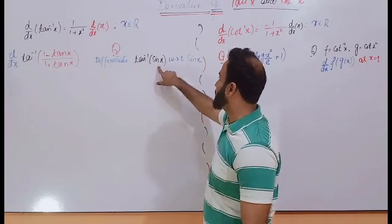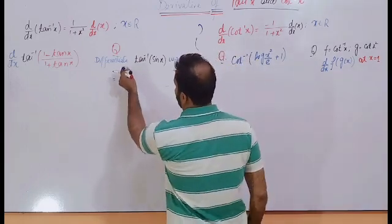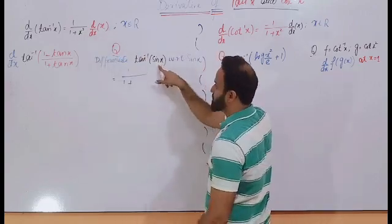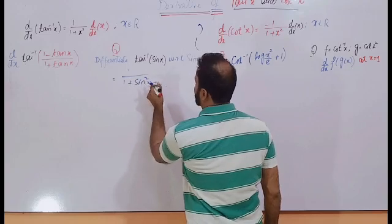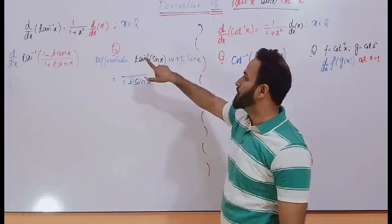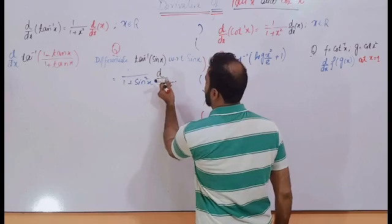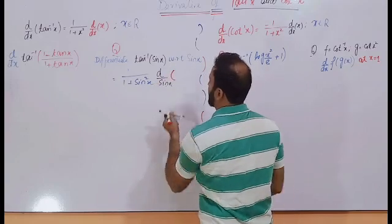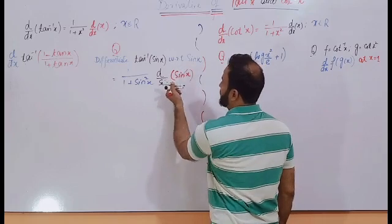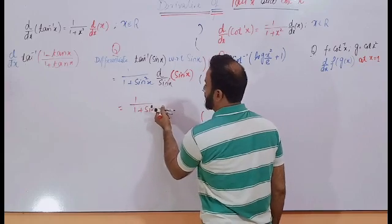Differentiate tan inverse of sine x with respect to sine x. Taking the derivative: 1 plus, here is x squared, you can take the sine squared x and take the derivative. According to the definition, we want to take the derivative with respect to sine x, so here will be sine x. And what is inside the tan inverse is sine x, so it will become 1, and the required answer is 1 over 1 plus sine squared x.